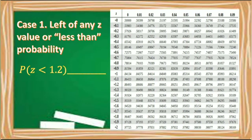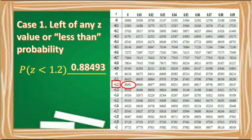Let's have an example. Find the probability of Z which is less than 1.2. Our given Z-score is only a two-digit number, so we look for this number in the first column. We look for 1.2 and find the area beside this number. Therefore, the area corresponding to the Z-score less than 1.2 is 0.88493.